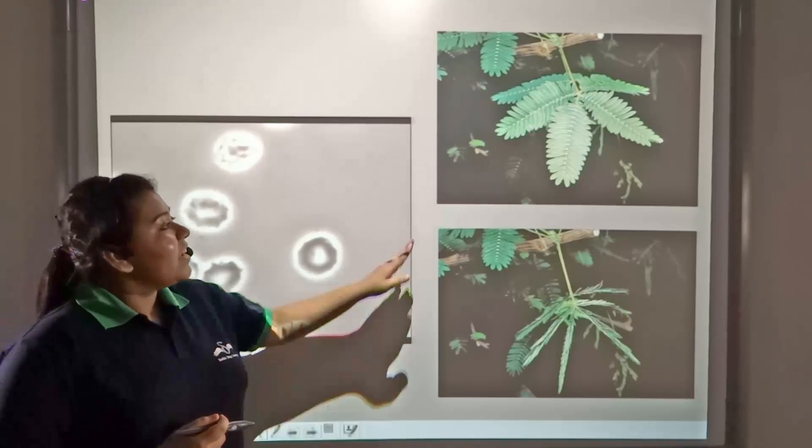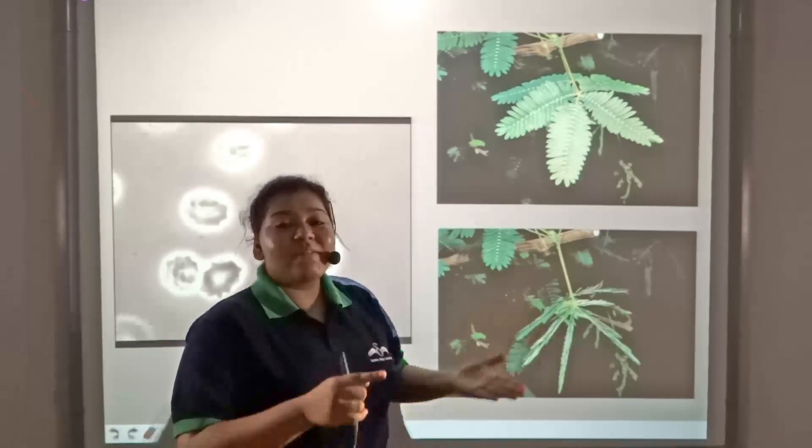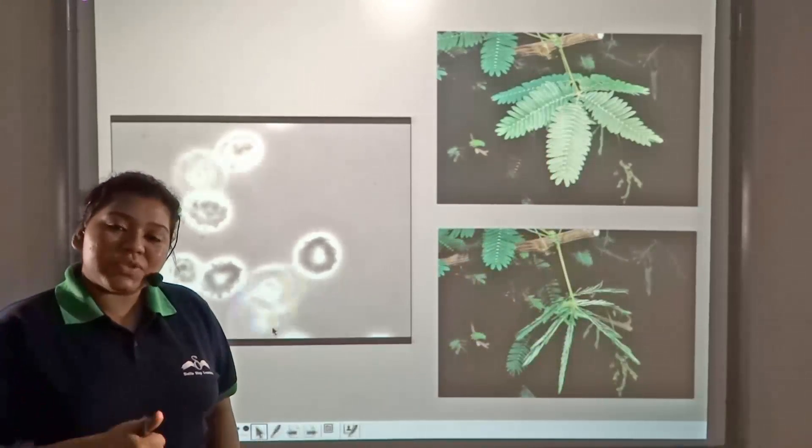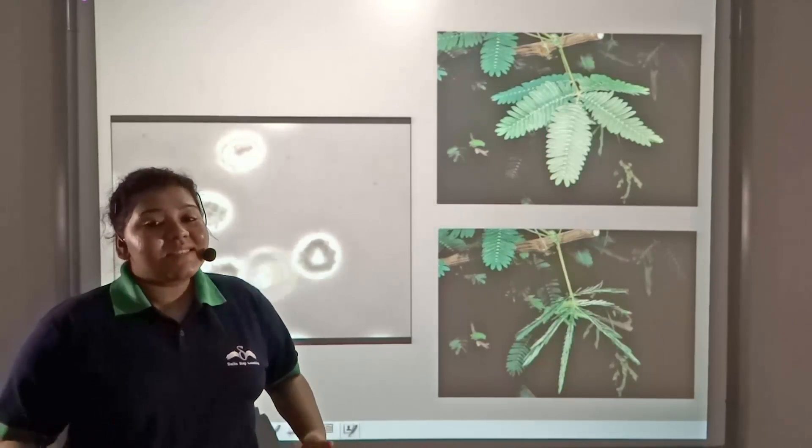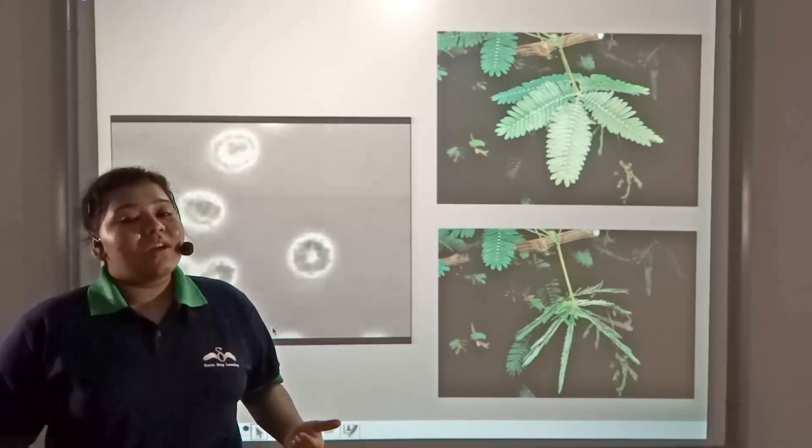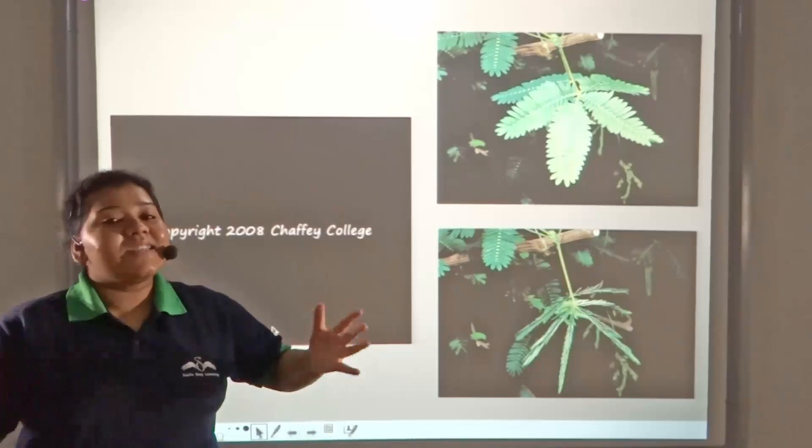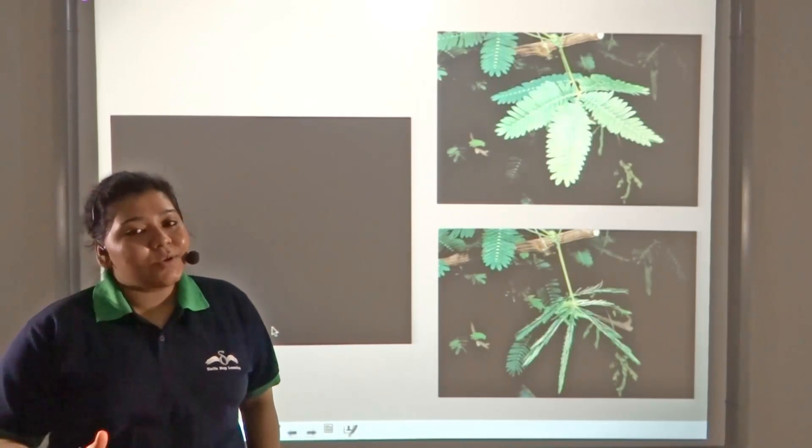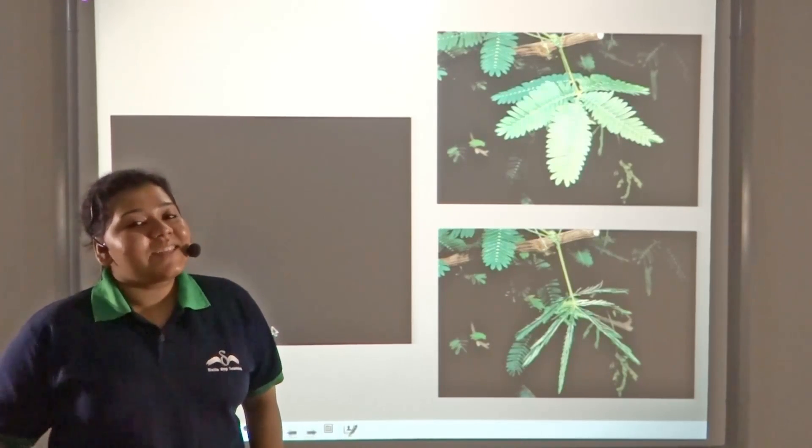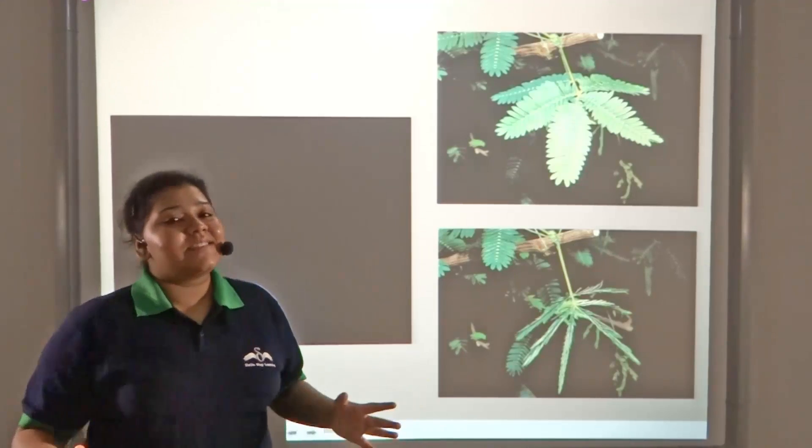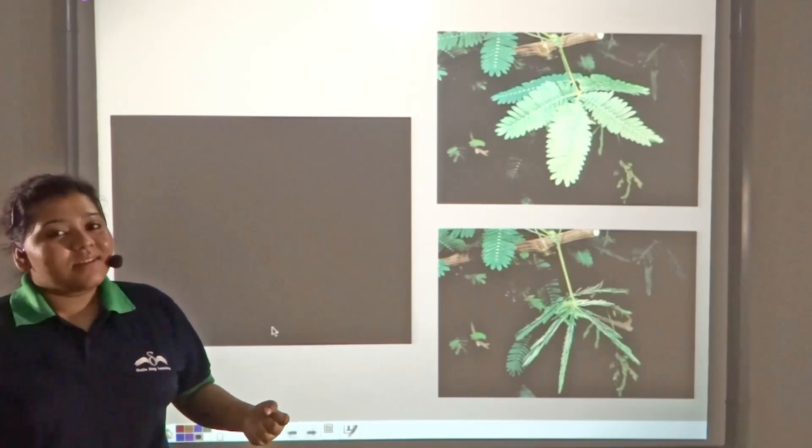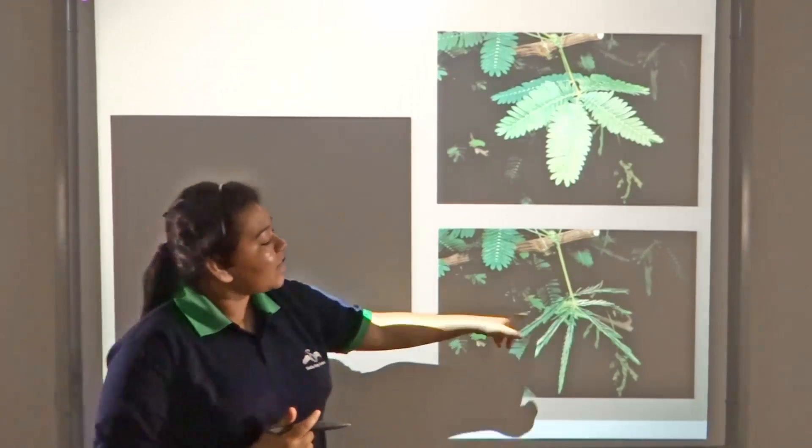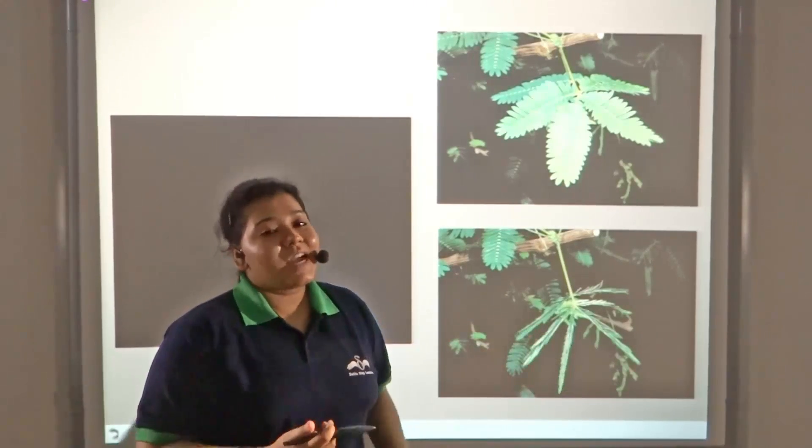Similarly, in Mimosa pudica, when we touch the leaves, a chemical is secreted in the tissue space. This causes an increasing amount of ions outside the cells. Because of the high ion concentration outside the cells, water from inside the cell is drawn out, so the cells become dehydrated and shrunk, and that is why the leaves droop and fold.